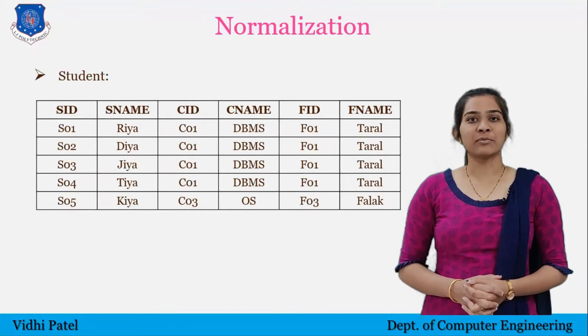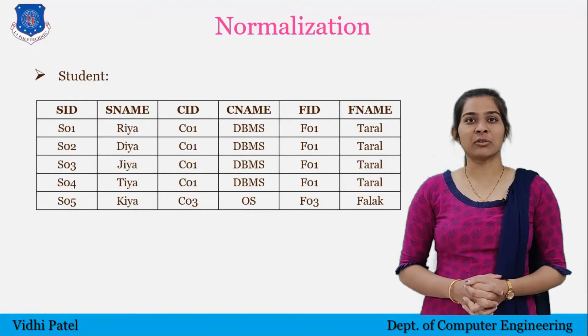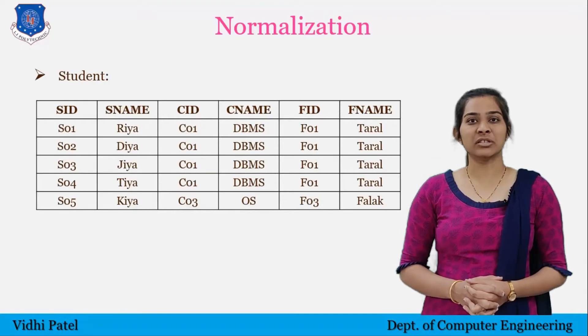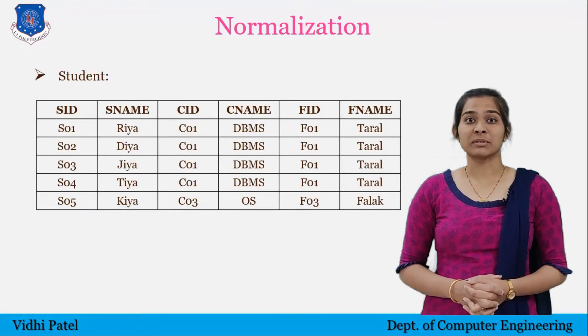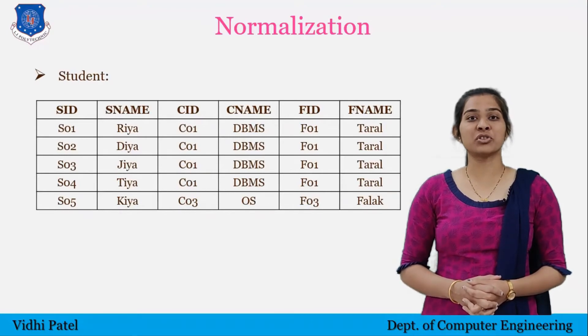There are 3 types of problems. The problems are insertion anomaly, deletion anomaly, and updation anomaly. Anomaly means problems that occur on special occasions — specifically when performing the 3 operations on the database: insert, update, and delete.